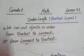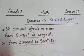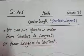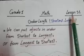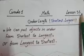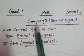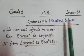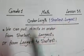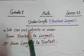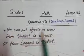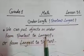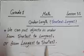Hello Grade One. Today we're going to talk about the first math lesson in the fourth quarter — Lesson 9.1: Order Length. Shortest and longest. We can put objects in order from the shortest to the longest, or from the longest to the shortest.